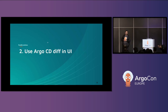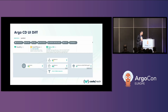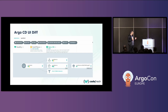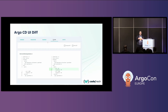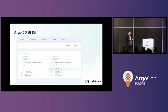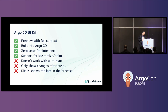The first and most obvious solution: Argo CD has a built-in diff utility in the UI. Whenever something changes — either in the manifest or in the cluster — Argo CD will tell you something has changed. You can click on it in the UI and get the actual change: all manifests will be rendered, you'll see the final result and what will change. This works — it's okay.